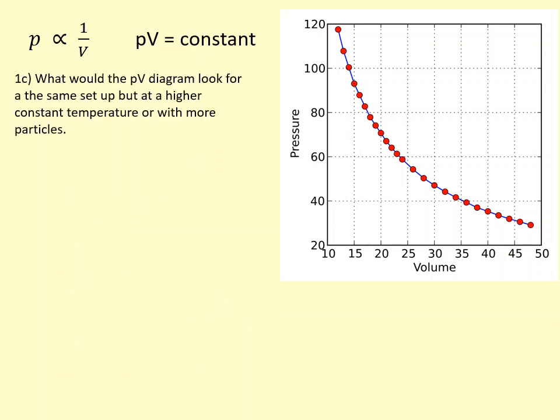What would the PV diagram look like for the same setup, but at a higher constant temperature and or with more particles? What we do is pick a particular volume. At that volume, if the temperature had been higher or the number of particles higher, then we'd expect the pressure to be more. Because there's more particles, then of course there's going to be more frequent collisions. Or if the temperature is higher, then the collisions are also going to be more frequent.